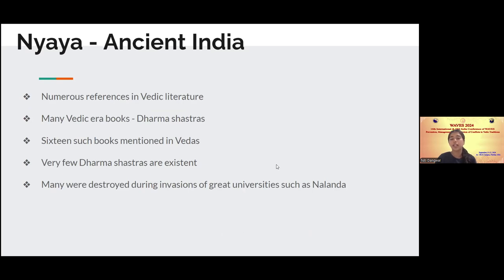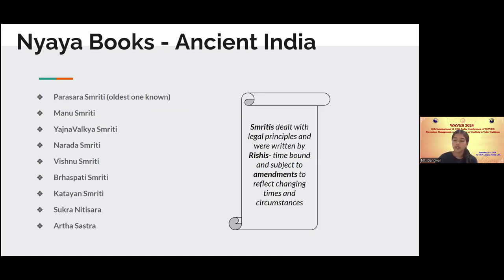Nyaya in ancient India is described in many places of Vedic literature. Though some of the Nyaya books did not survive, the Vedas refer to a total of 16 Dharma Shastras dealing with Nyaya. Only a few of those are still extant today. Many perished during the various invasions and destructions of great universities and libraries in India, such as Nalanda. These smritis dealt with legal principles and were written by rishis. They were time-bound and often revised, as all smritis are supposed to be, to reflect changing times and circumstances. Some content may not make sense from one epoch to another, while some content is eternal.